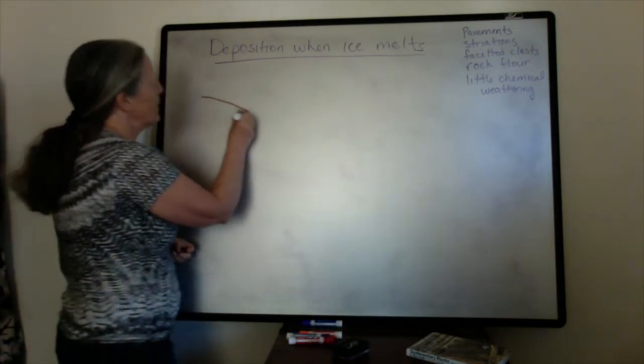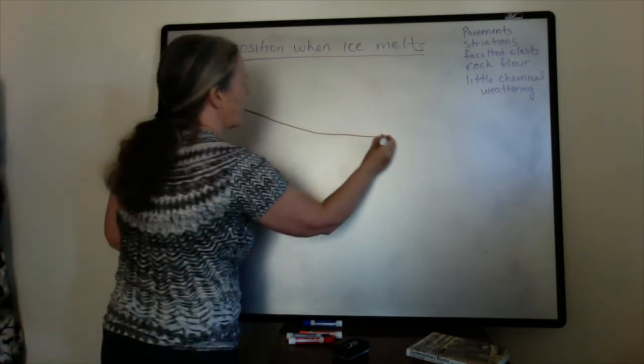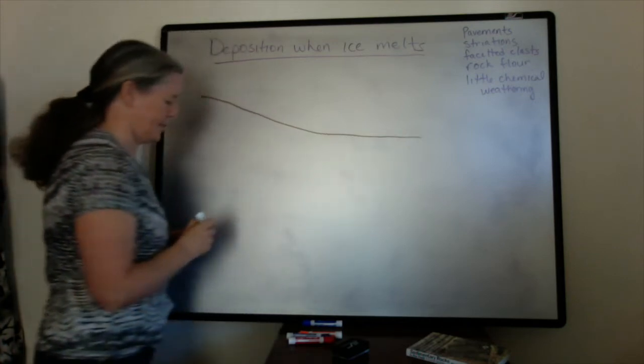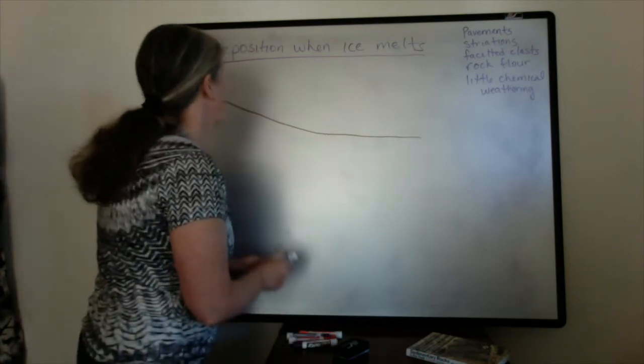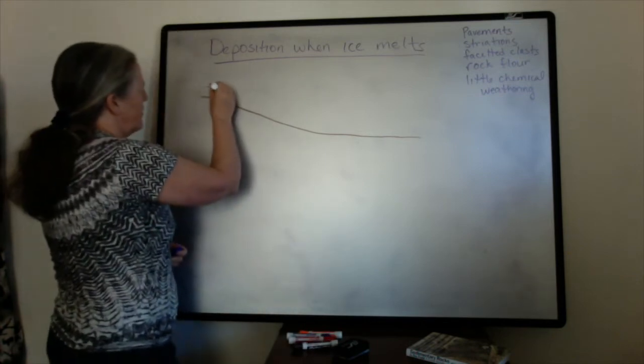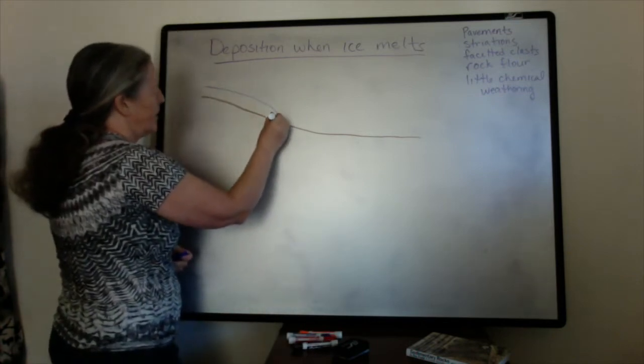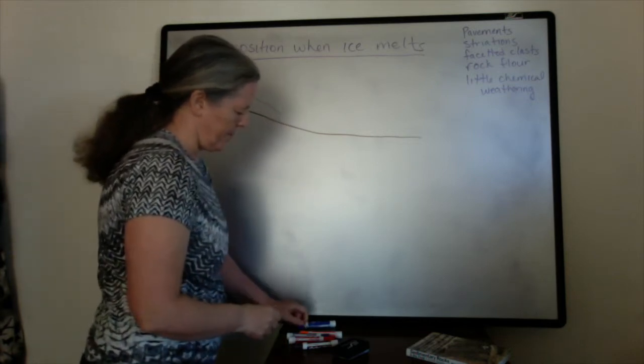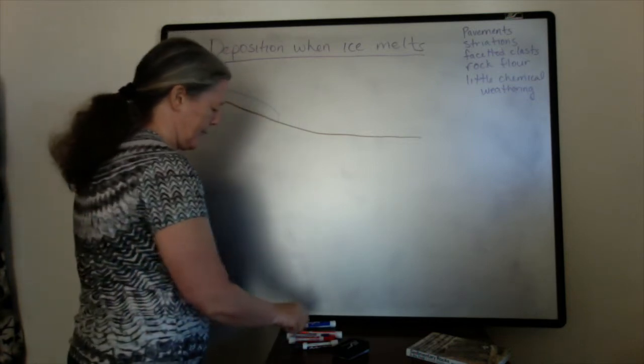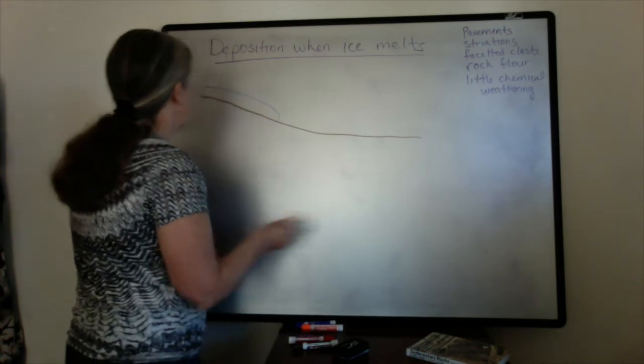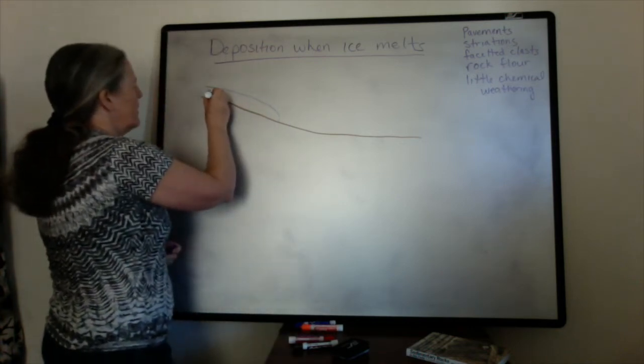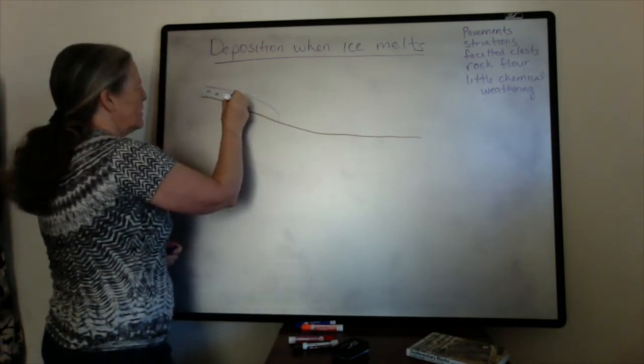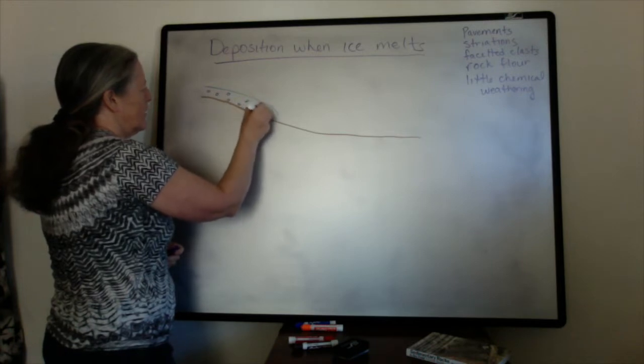If we have a slope here and we have the glacier on it, it often has a steep front because it's very viscous, it can maintain that front.